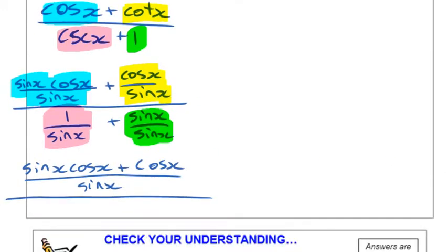So then what I have on the bottom is one plus sine x over sine x. I actually have those two single fractions.